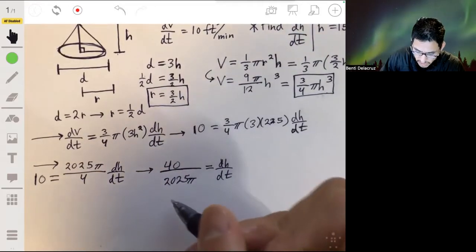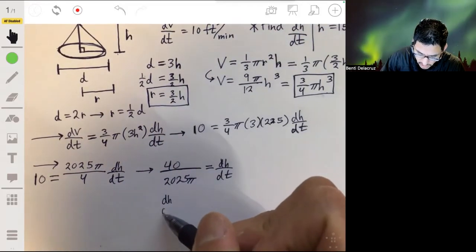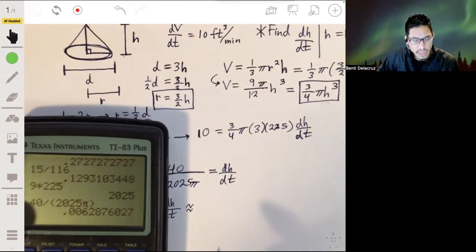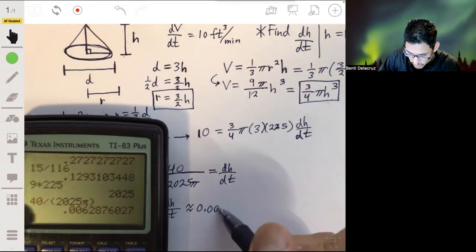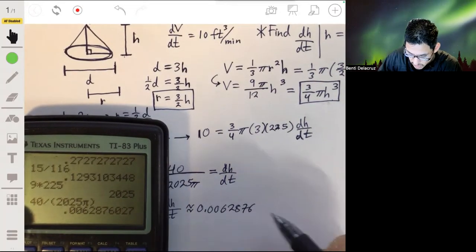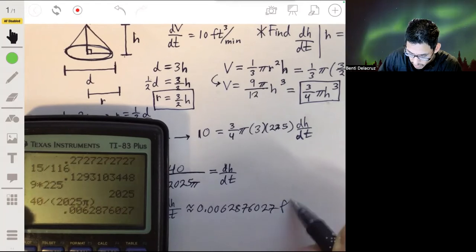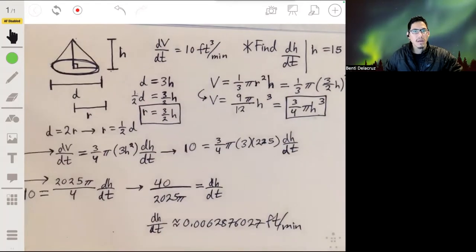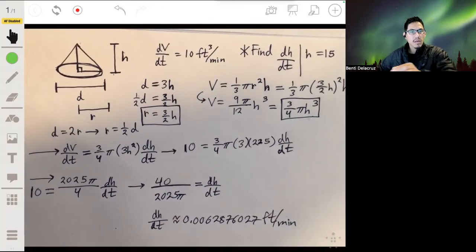The final answer would be that dh/dt is approximately 0.0062876027830 feet per minute, and there you go.